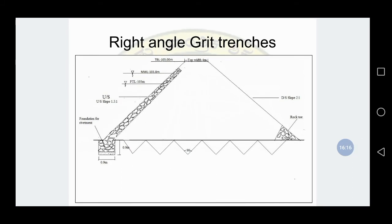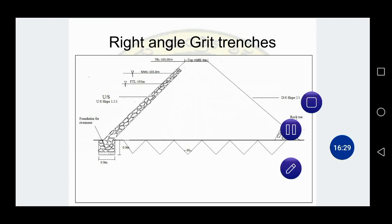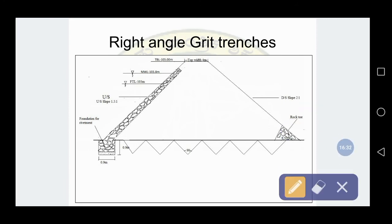Moving to the next step — drawing grip trenches. The grip trenches are right angle triangular grip trenches where the interior angle is 90 degrees. Draw one line and maintain an angle of 90 degrees to get the right angular grip trenches as shown in the figure.